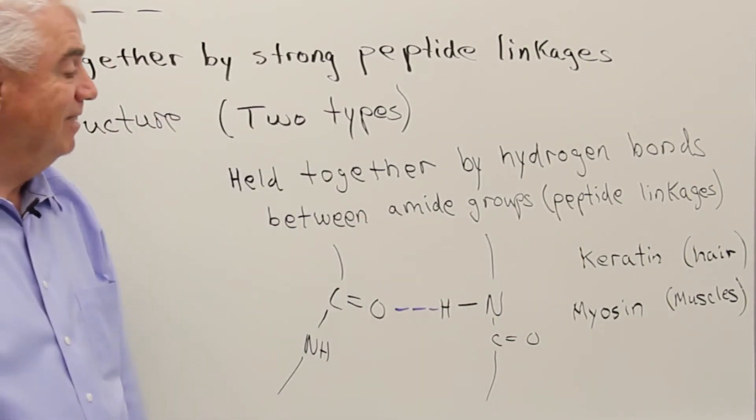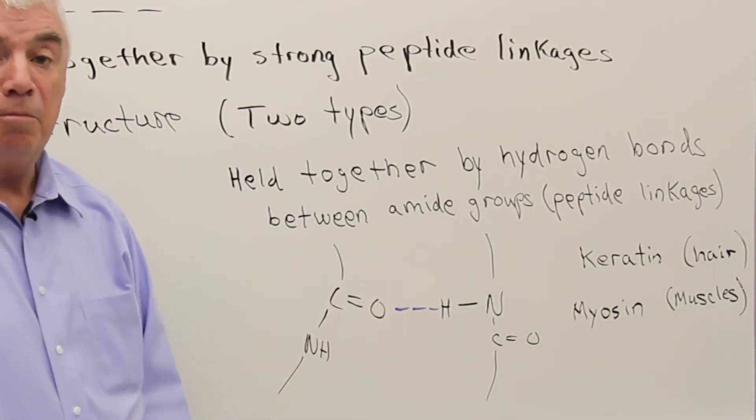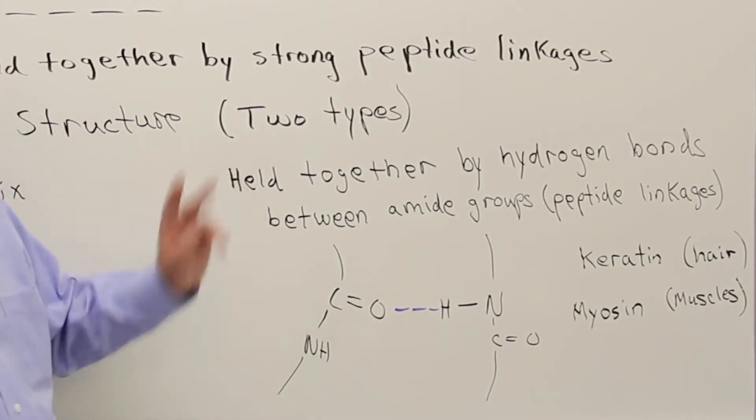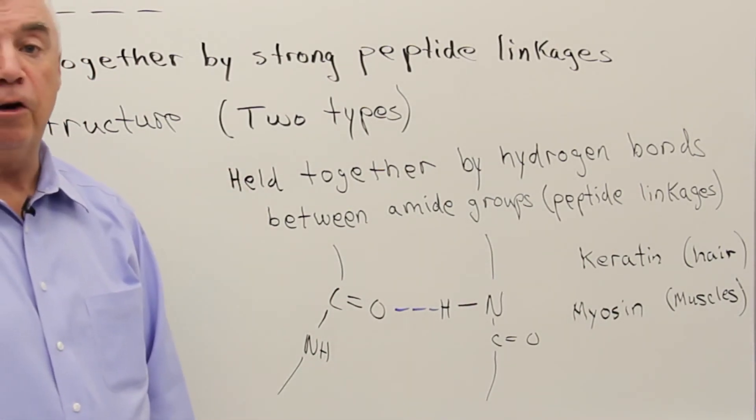A couple of examples of proteins that have helical portions: keratin, the protein in hair, and myosin, a muscle protein.